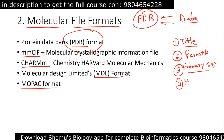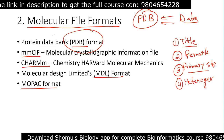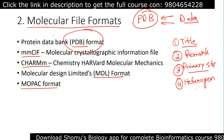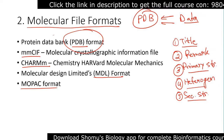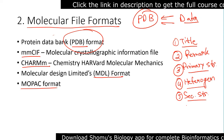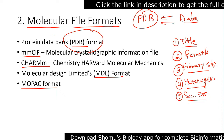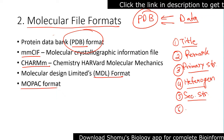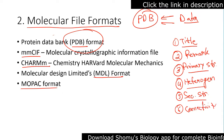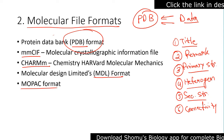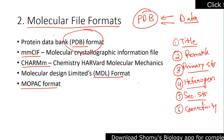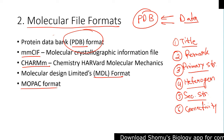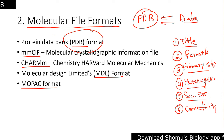Then we have the heterogen section, which contains a complete description of non-standard residues. Next is the secondary structure section, which includes helix, sheets, and turns. Then we have the connectivity section — very important because without connectivity we cannot comment on the architecture of proteins. It allows us to understand domains and architecture, covering different kinds of linkages between secondary structures such as disulfide linkages and electrostatic interactions.